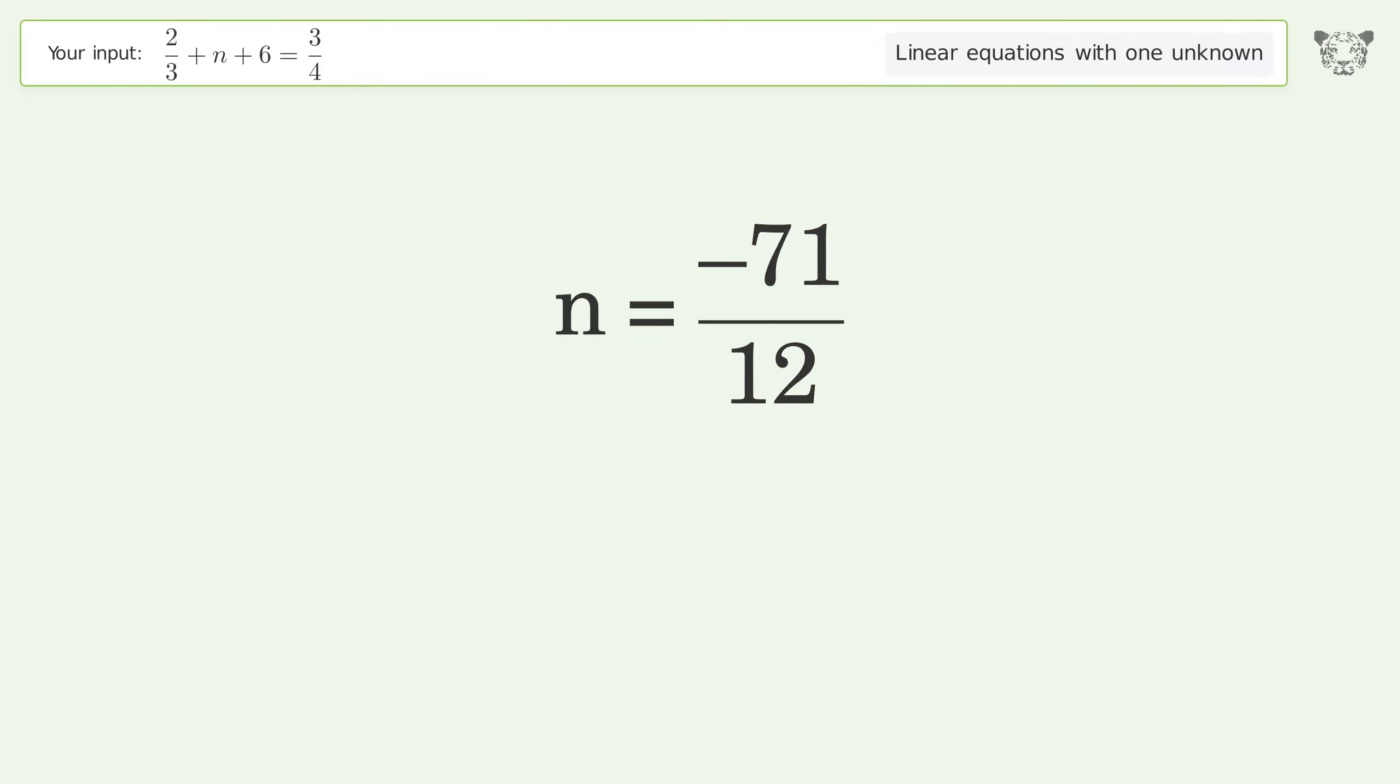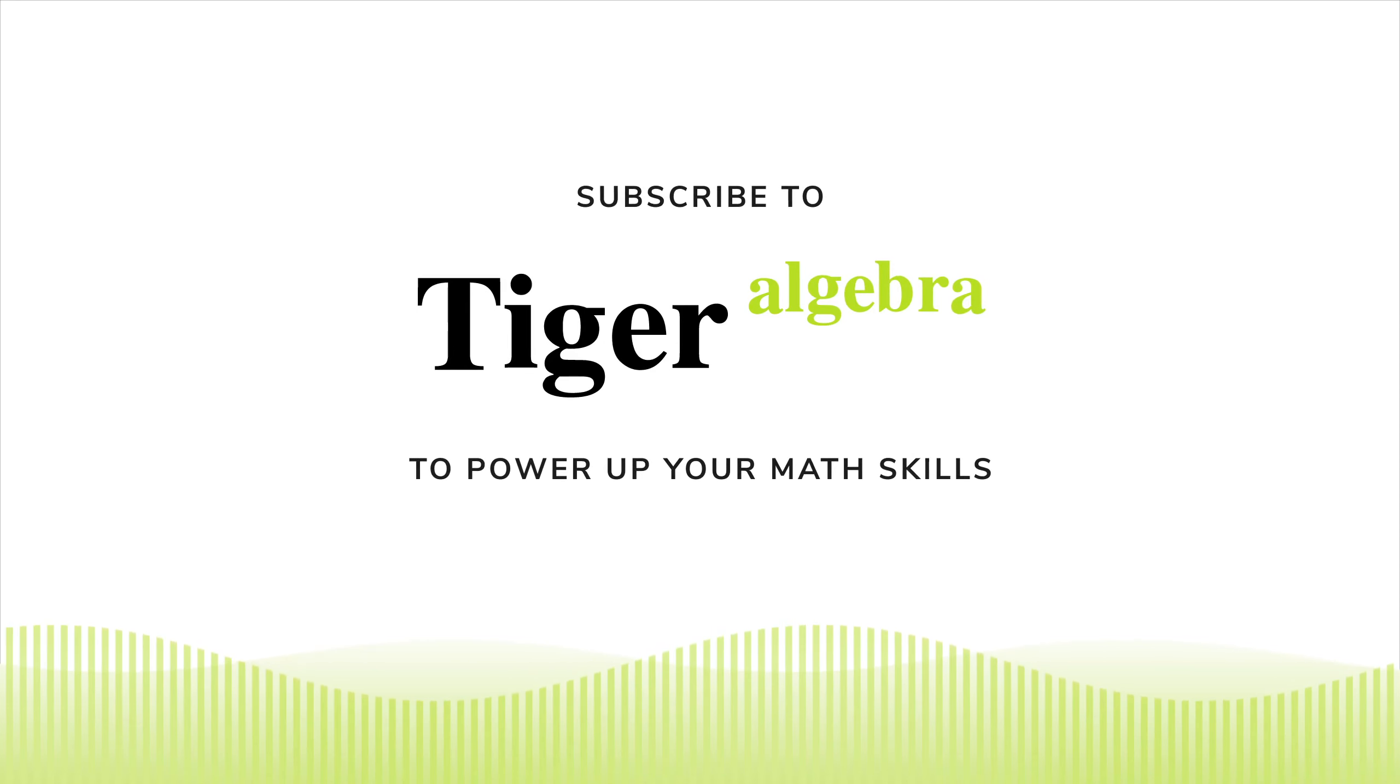And so the final result is n equals negative 71 over 12.